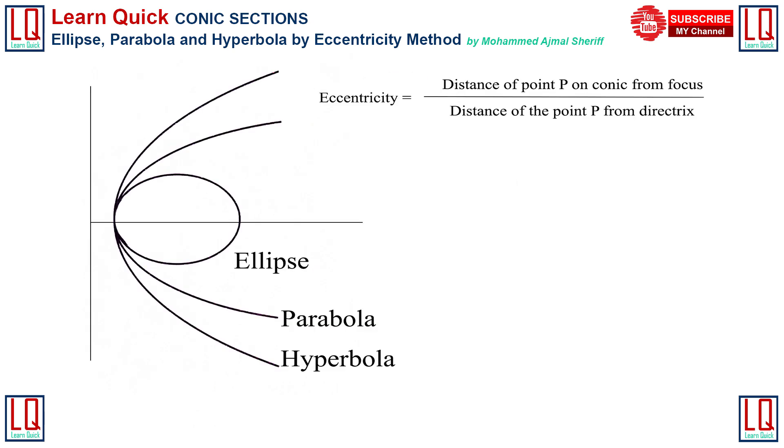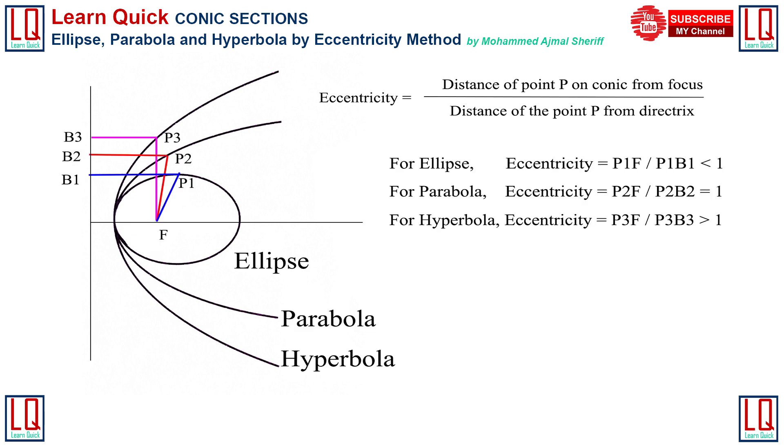Consider a point P on the conic curve moving on a plane. Eccentricity is a ratio between the distance of point P from focus and distance of the point P from directrix, and it is always a constant. So throughout the curve, ellipse, parabola and hyperbola obeys the ratio.